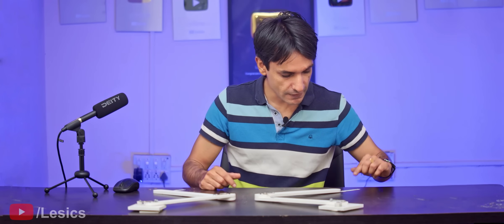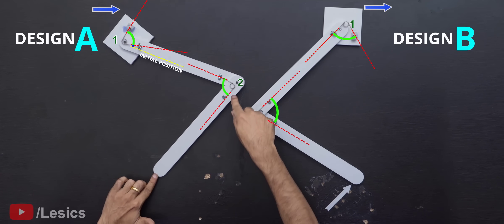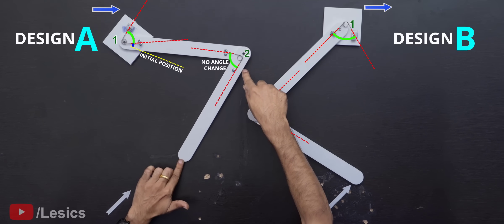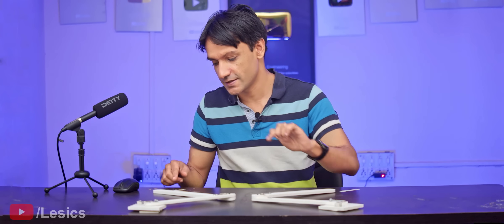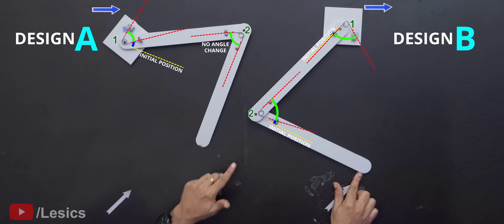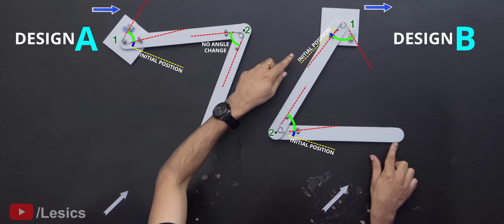In design A, when I apply the force, the spring 2 is not at all getting either compressed or stressed. But in design B, both these springs are going for a compression.